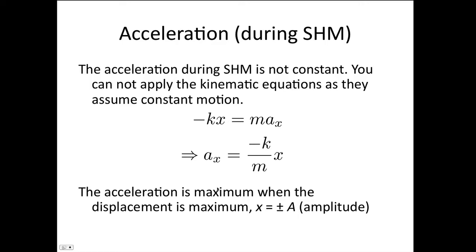The maximum displacement we can have in simple harmonic motion is called the amplitude. So the maximum acceleration will occur when x is equal to the amplitude, when x is plus or minus A.